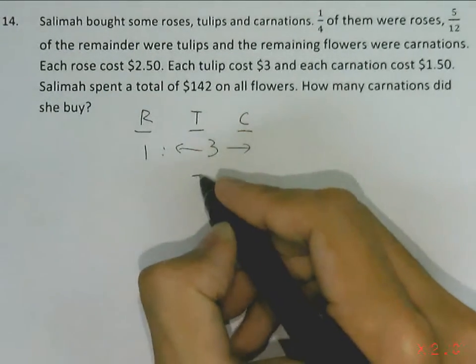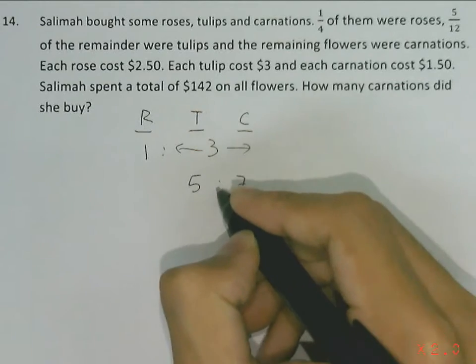From here we see that the ratio of tulips to carnations will be 5 to 7.